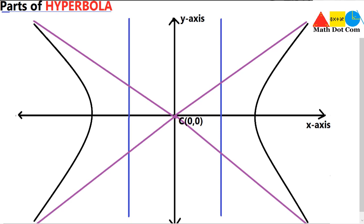We have already drawn the hyperbola in the coordinate axis, that is x and y axis, with the center at (0, 0). This hyperbola is basically a standard hyperbola because its center is at (0, 0) where x is 0 and y is 0. It is not necessary that the center must be (0, 0). We will also discuss later about the shifted hyperbolas where the center is not (0, 0).